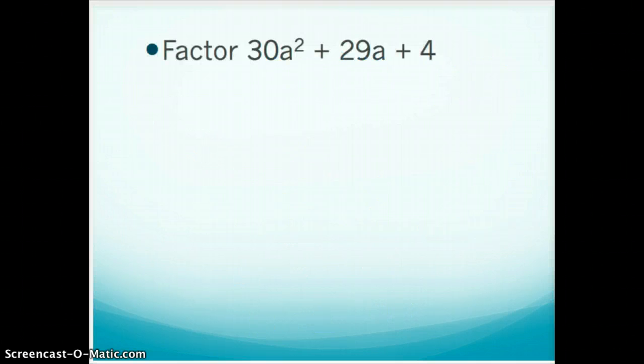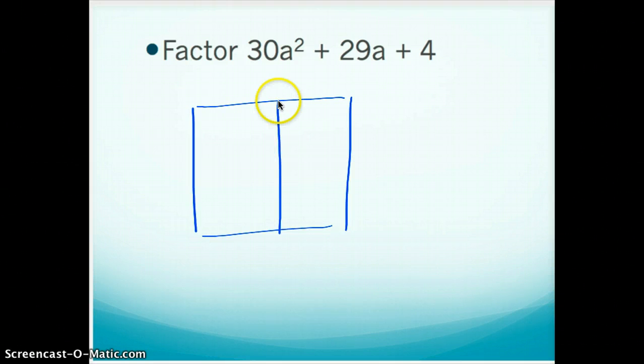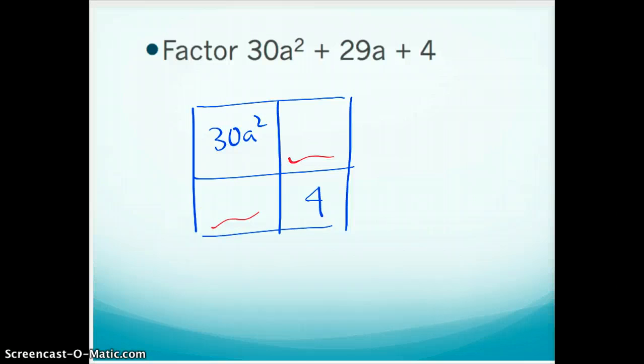So this time, factor 30a squared plus 29a plus 4. So this time, I'm still going to guess and check, but this time I'm going to guess and check with a box. Because I know that this is going to multiply to give me 30a squared. This is going to multiply to give me 4 in here. And then, I don't know about these, but somehow they're going to have to sum to 29. So we're going to play around with ways to get this to work. So when I see 4, I know my choices are 2 and 2, or 1 and 4. When I see 30, I've got a lot more choices.